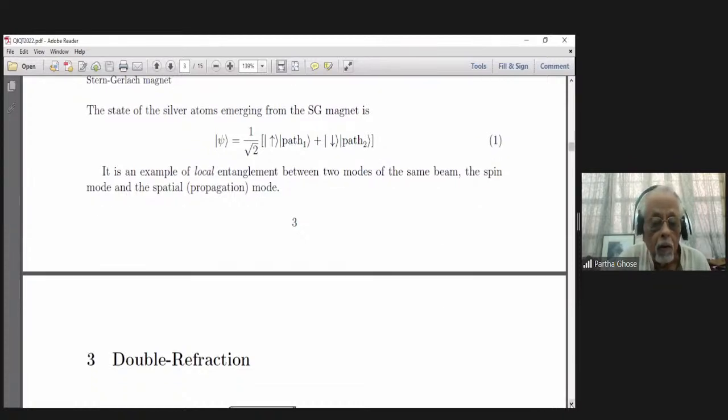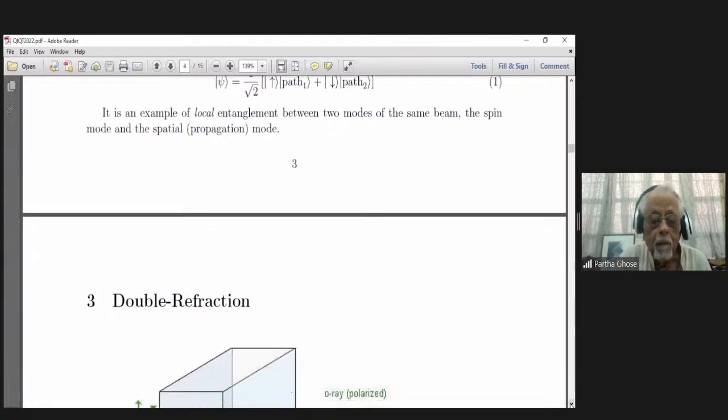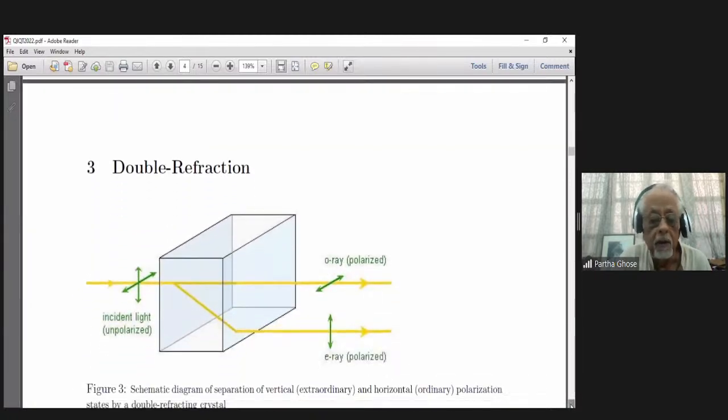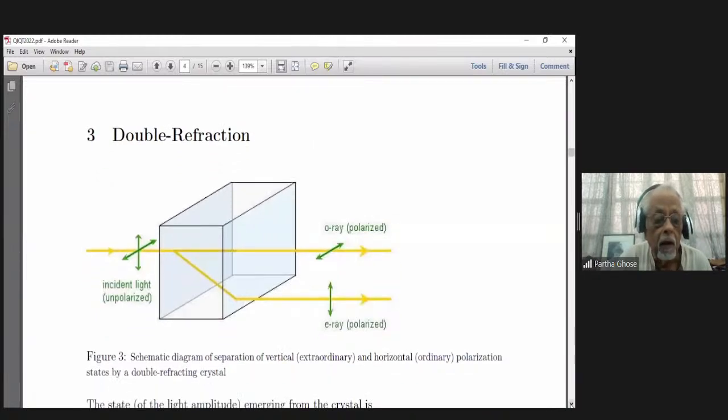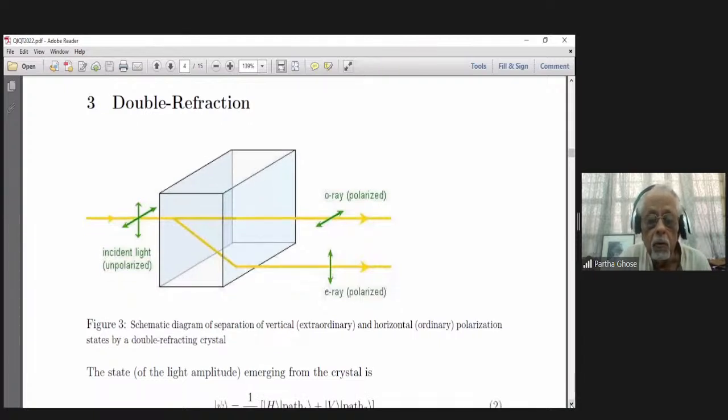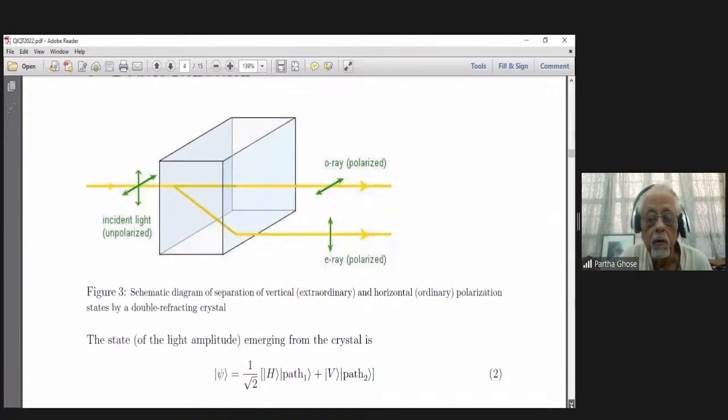Now, let me show you another thing called double refraction. Suppose you have a doubly refracting crystal and you have unpolarized light incident on it.